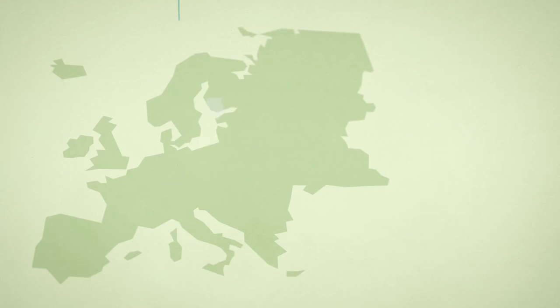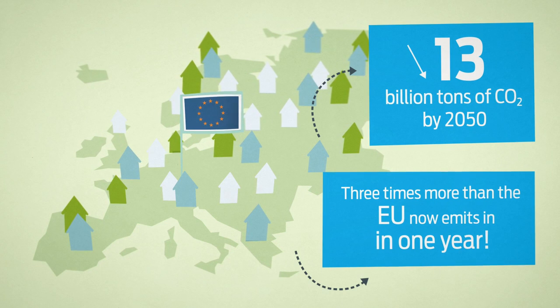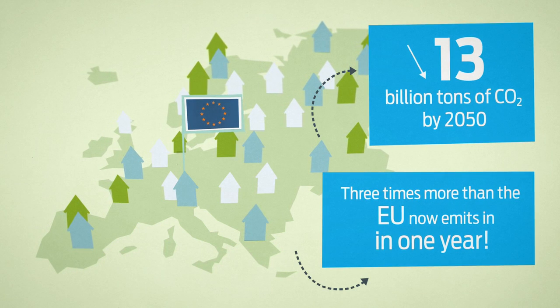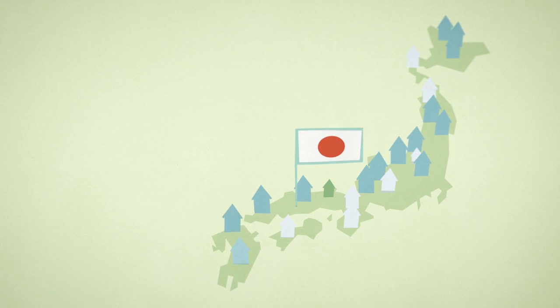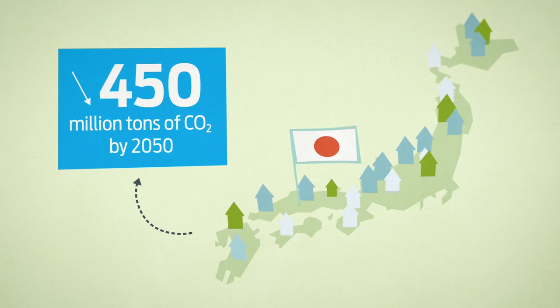In the European Union, energy-efficient building products could create emission savings in homes of more than 13 billion tons by 2050. In Japan, more than 450 million tons of emission savings in homes is achievable in the same time frame.